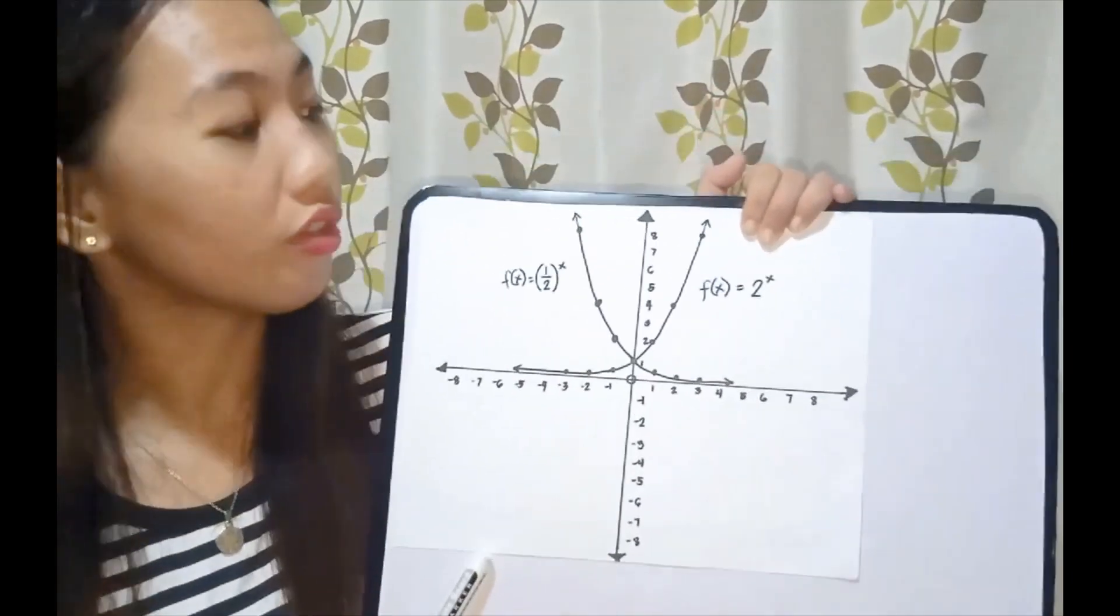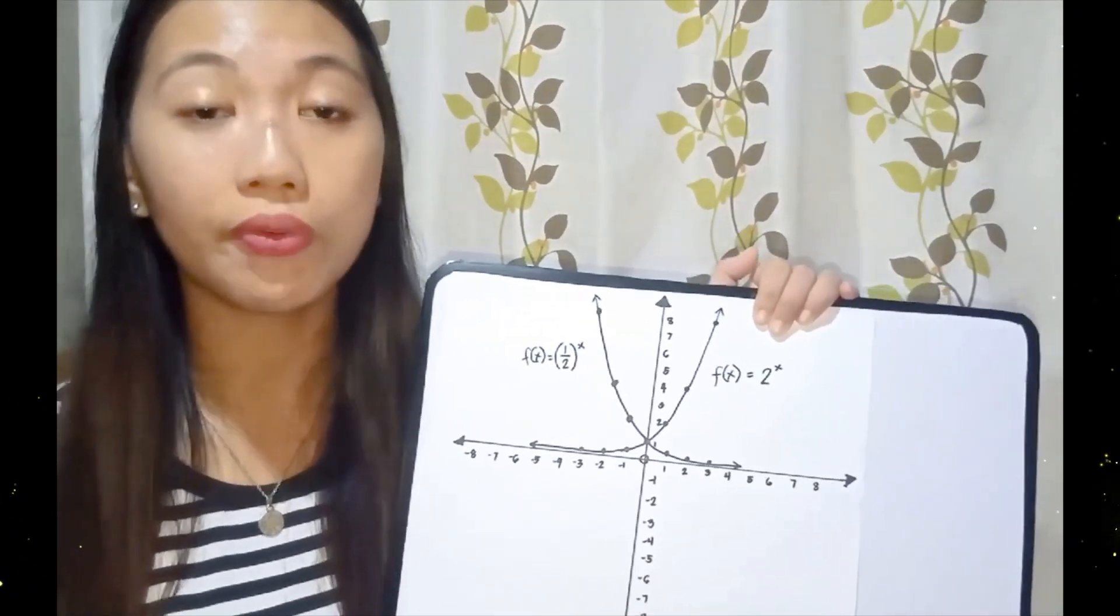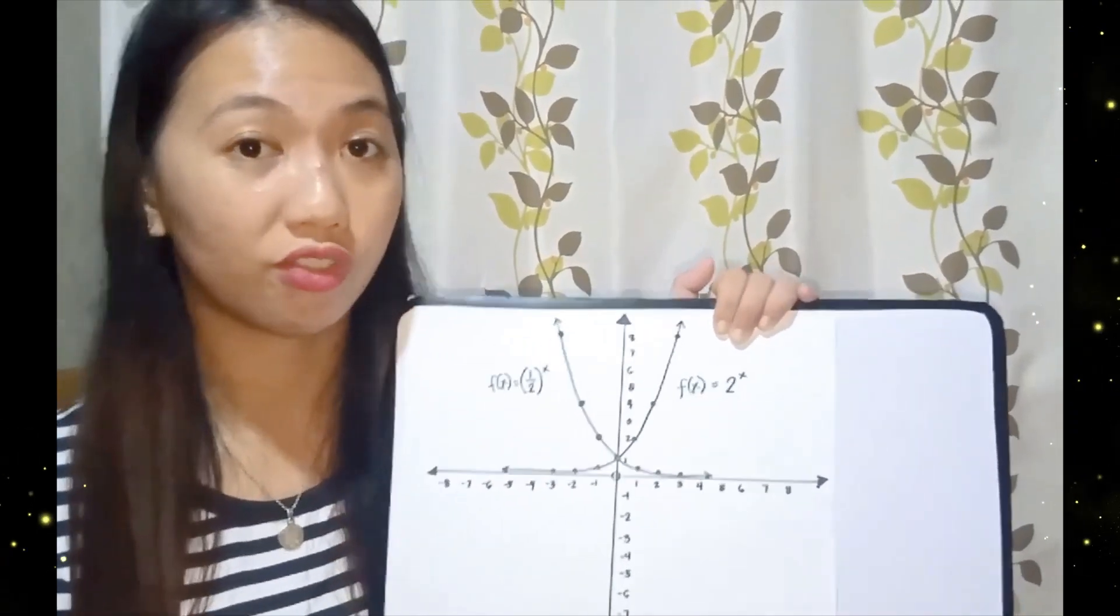The first and second graphs illustrate the general behavior patterns of exponential functions. We have two behaviors in exponential functions.